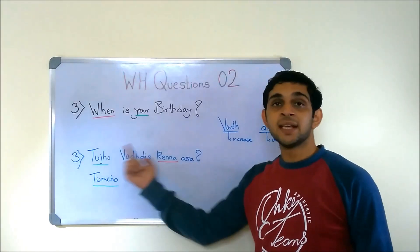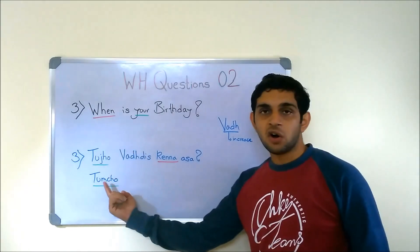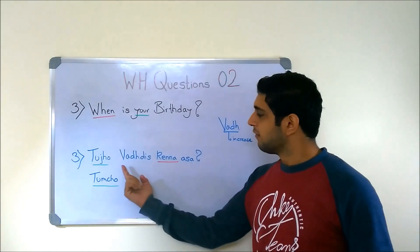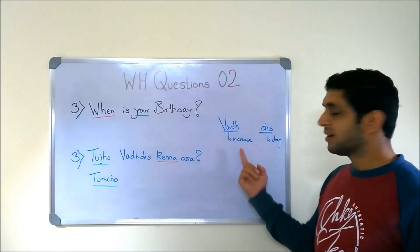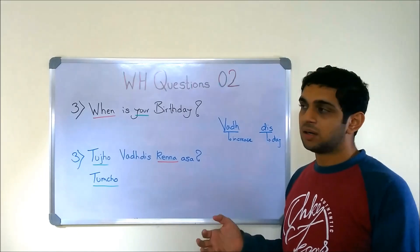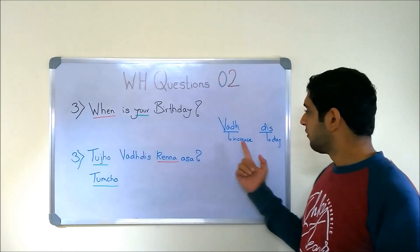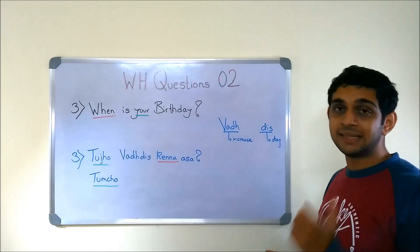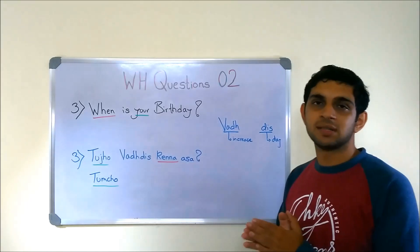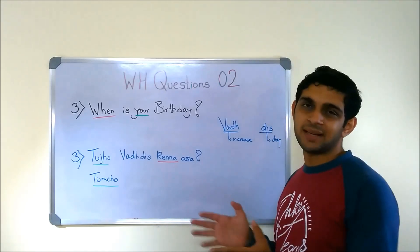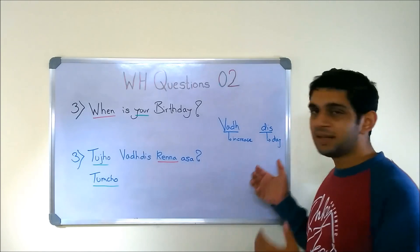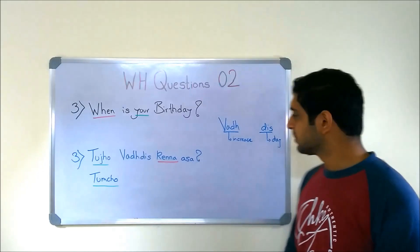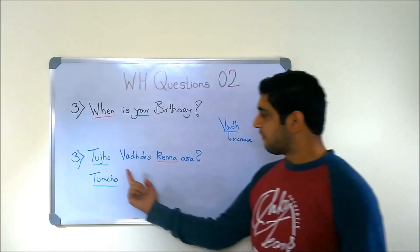So the last question of the day: when is your birthday? TUZHO VAR DIS KENNA ASA — TUZHO is 'your', or TUMCHO with respect. VAR is basically 'growth' or 'increase', DIS is 'day', so VAR DIS combined you could say is 'the day your age increases' — that's essentially what birthday means. KENNA is 'when', and ASA means 'is'.